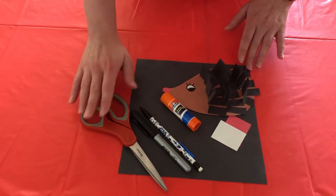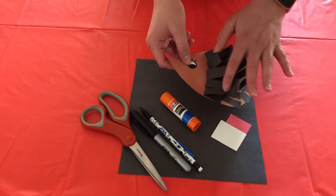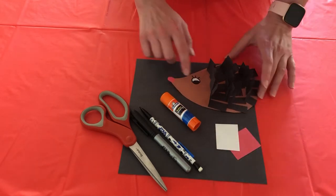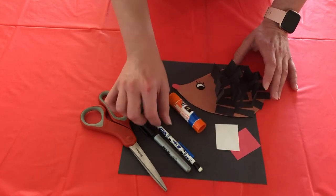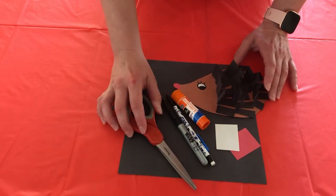So what you're going to need for this craft is some brown construction paper. I will also be using black for the quills and two smaller pieces that you will use to cut out to make the eyes and the nose, and also some glue, a pencil, a marker or a colored pencil, and some scissors.